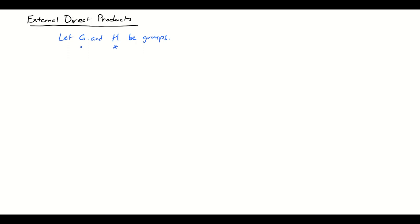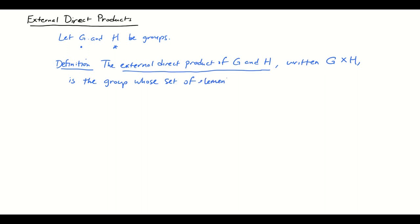So here's how we define the external direct product of G and H. So this is a definition. The external direct product of G and H, that's going to be written as G cross H. This is the group whose set of elements is the Cartesian product G cross H.